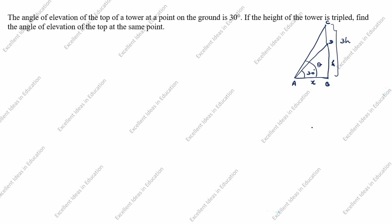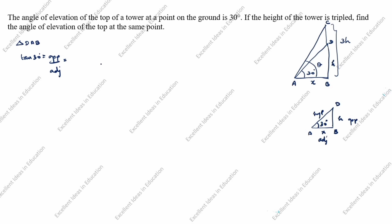Now we will take triangle ADB. This angle is given as 30 degrees. This is h, this is x. The opposite side is h, the adjacent side is x, and the bigger side is the hypotenuse. In triangle DAB, tan 30° is equal to opposite by adjacent.